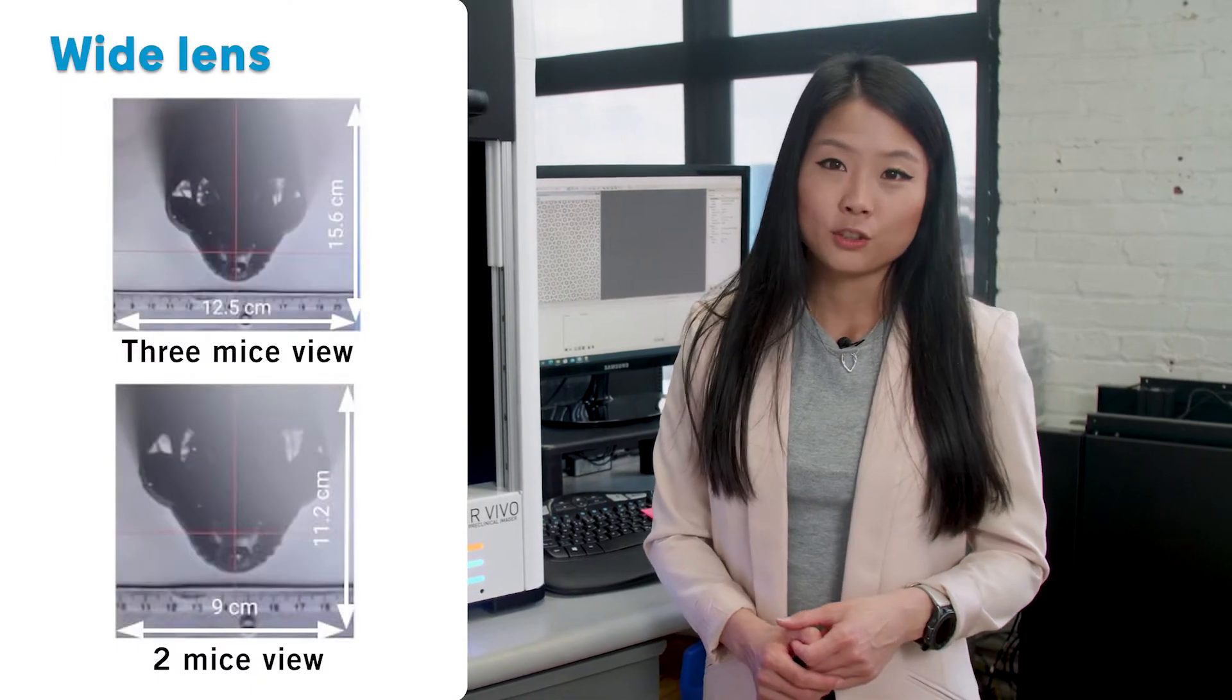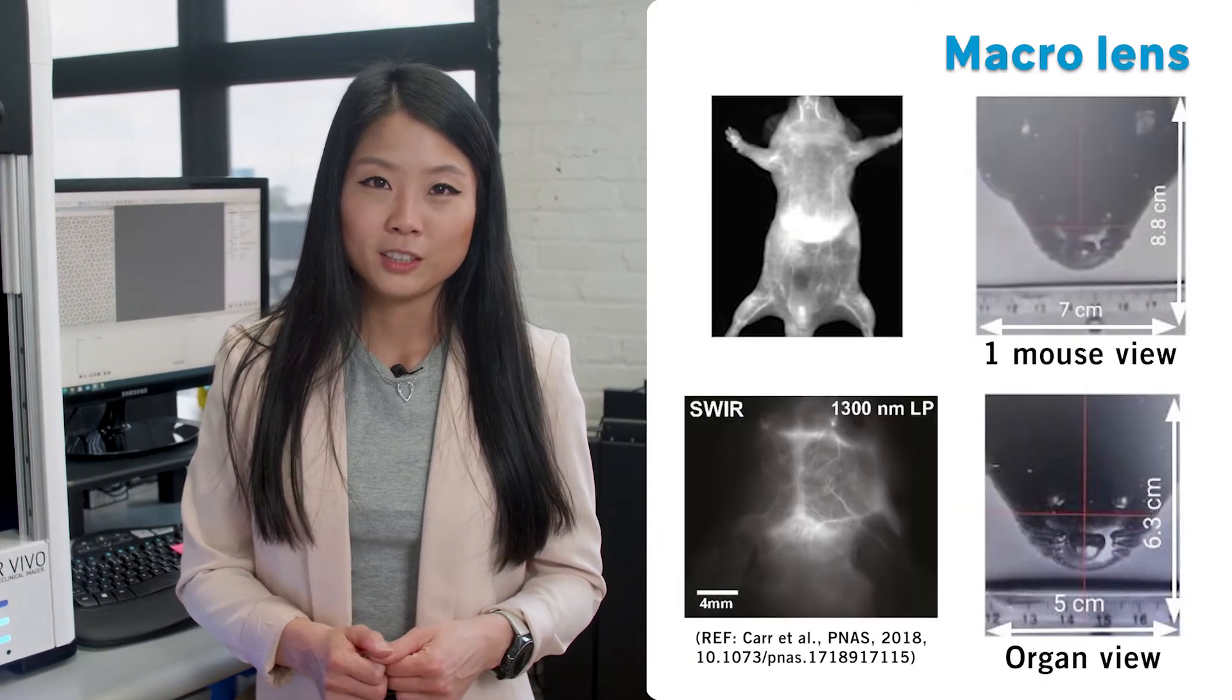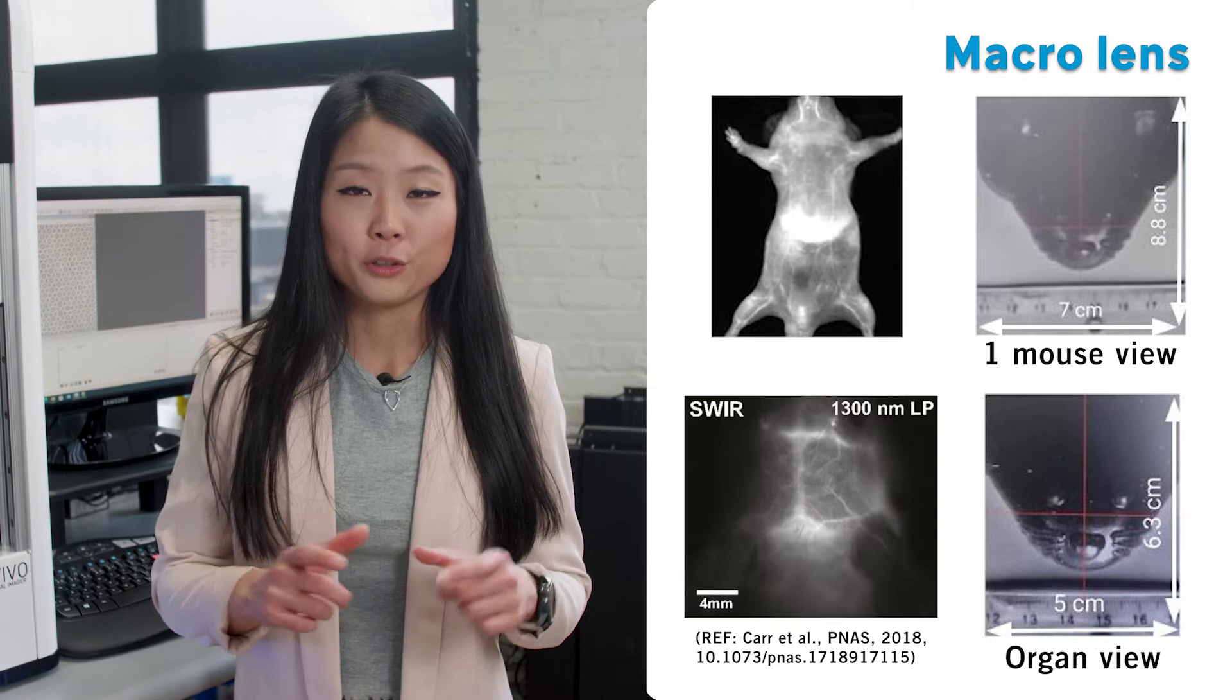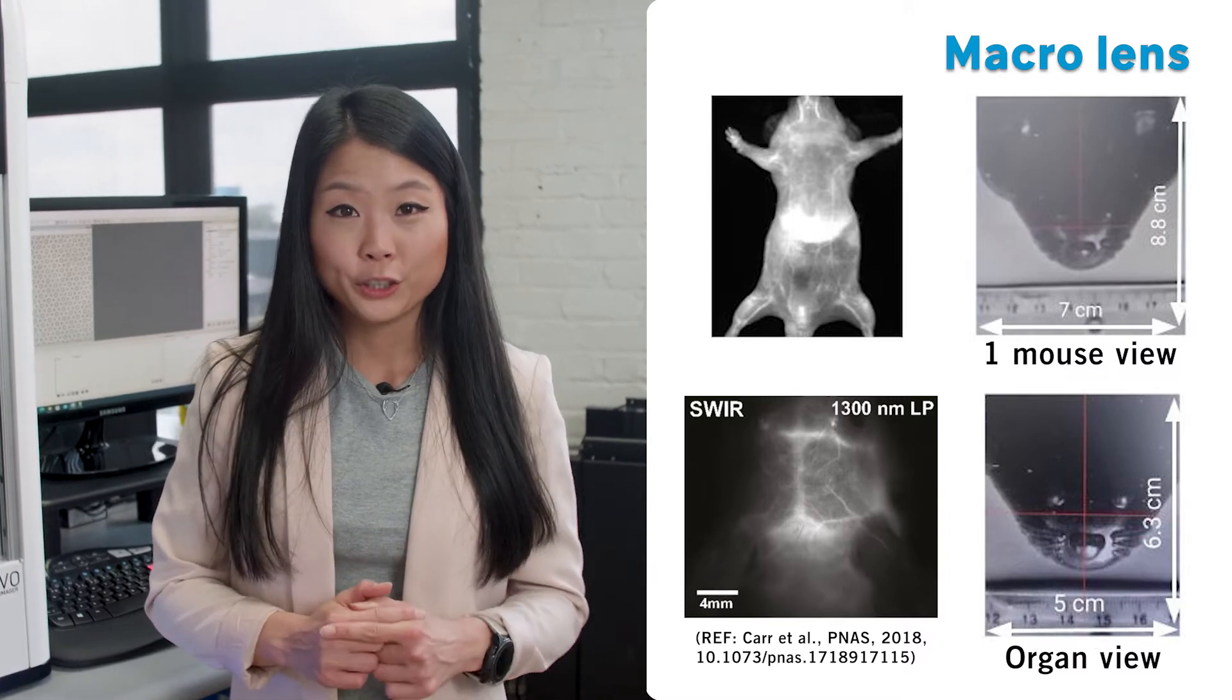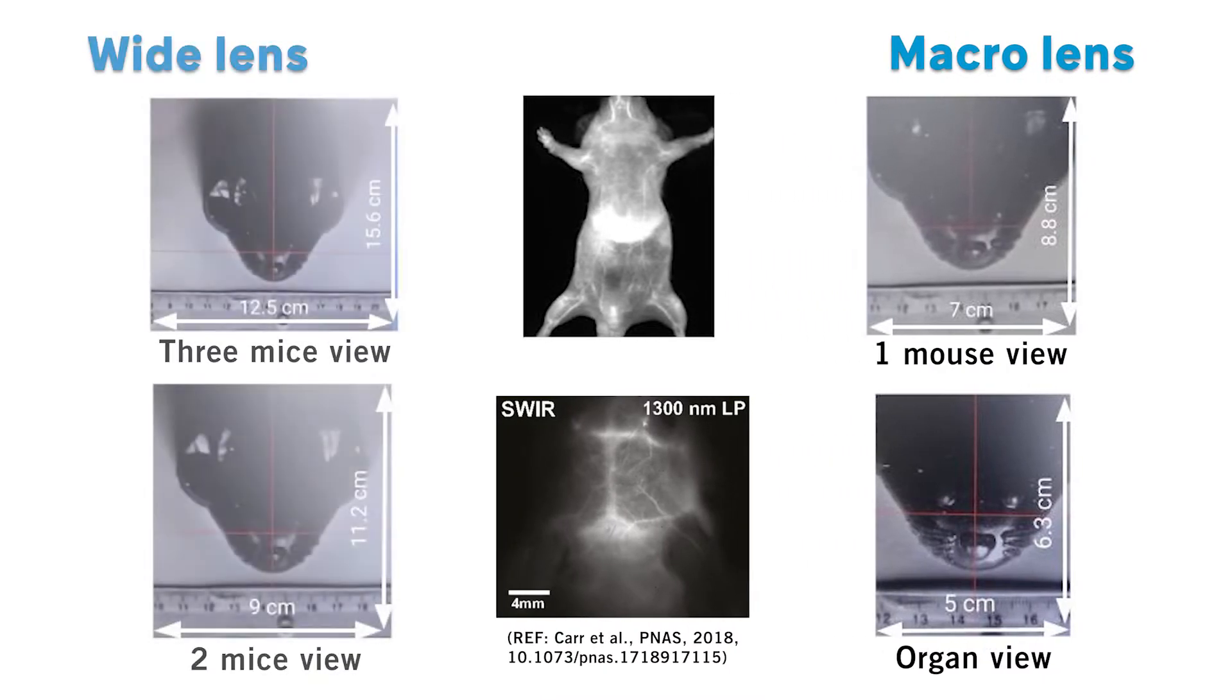For the lens options, you have three different choices. The first one is a wide lens meant to see three mice at the same time. The second option is a macro lens to have a field of view for one mouse. And the third and the nicest option is to have both of them to see three mice at the same time and also have the option to zoom in on a specific organ of the mouse, for example, the brain.